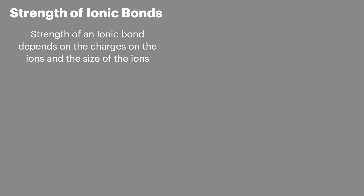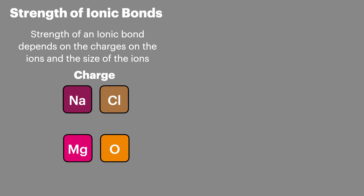The strength of an ionic bond depends on the charges on the ions and the size of the ions. Comparing sodium chloride and magnesium oxide: sodium has a 1+ charge and chlorine has a 1- charge, whilst magnesium has a 2+ charge and oxygen has a 2- charge. The ionic bond in sodium chloride is weaker than in magnesium oxide, because magnesium oxide has a greater charge on both ions. So as the charge goes up, the strength of the ionic bond goes up.